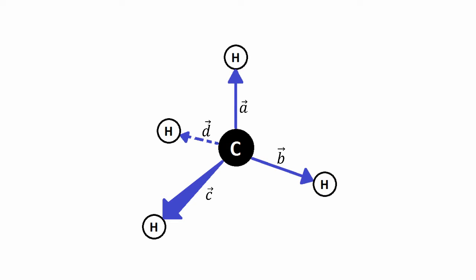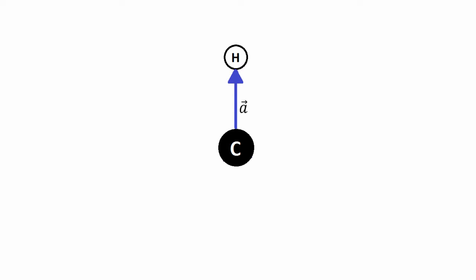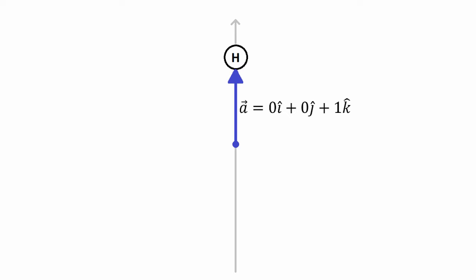All four vectors must have the same magnitude, so let's set each magnitude equal to one. The second assumption means the x, y, and z components of all vectors must each add up to zero. To keep things simple, assume one of the vectors points straight upward in the z direction — so its components are (0, 0, 1) with magnitude one.